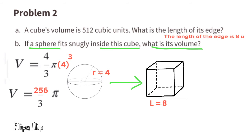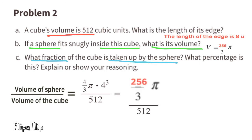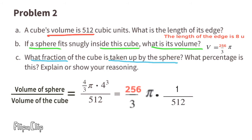Part C: what fraction of the cube is taken up by the sphere, and what percentage is this? The volume of the cube is 512. Dividing the sphere's volume by the cube's volume: 256 over 3 times pi divided by 512. Multiplying by the reciprocal of 512 gives pi over 6. Pi divided by 6 equals approximately 52%. The sphere takes up 52% of the cube.